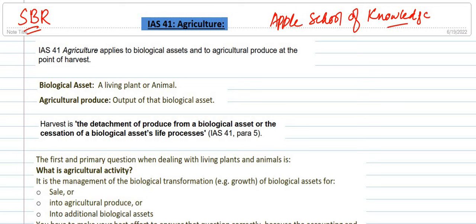We are going to start the new lectures on a new standard — IAS 41 Agriculture. In this standard we will discuss the biological asset, agriculture produce, and their accounting treatment.